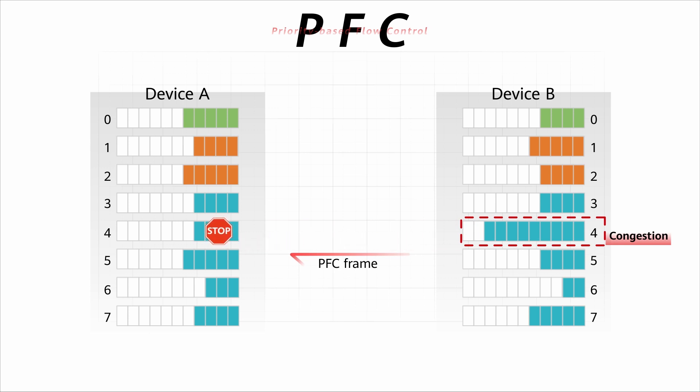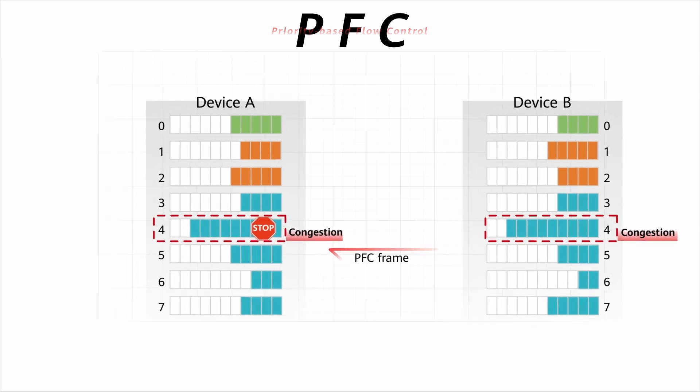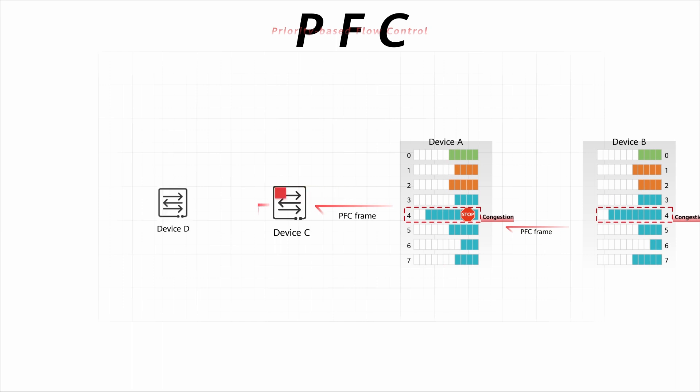After receiving the PFC frame, device A stops sending packets in the corresponding queue and buffers packets on the local interface. If congestion also occurs on device A, it sends PFC frames to its upstream device, and this can continue all the way to the transmit server.